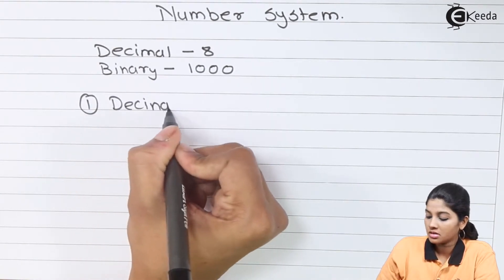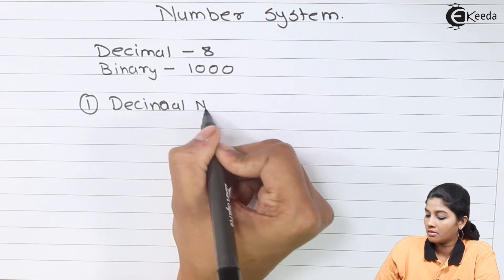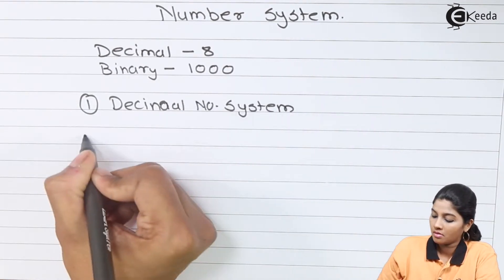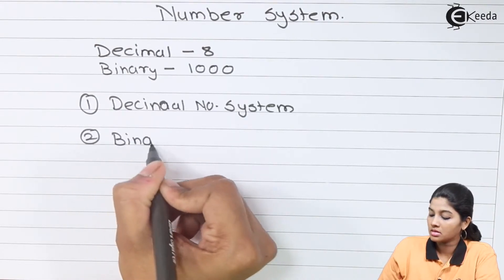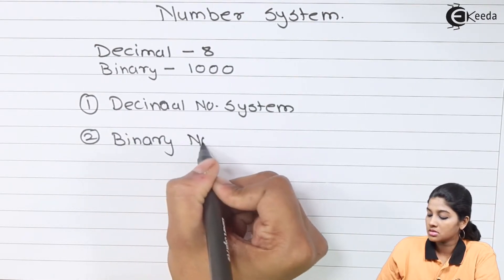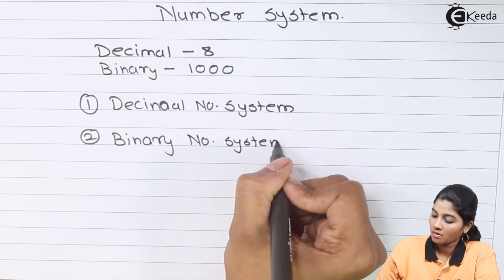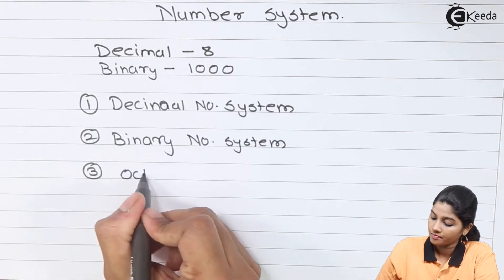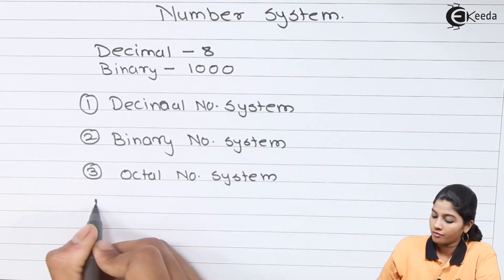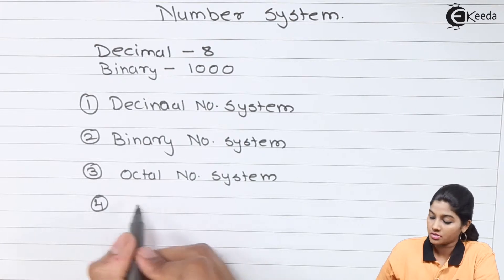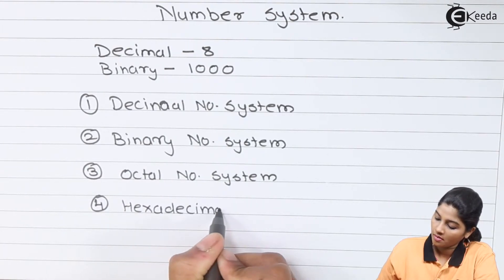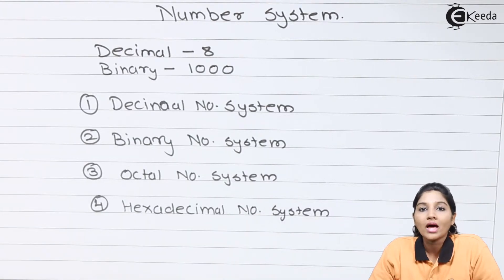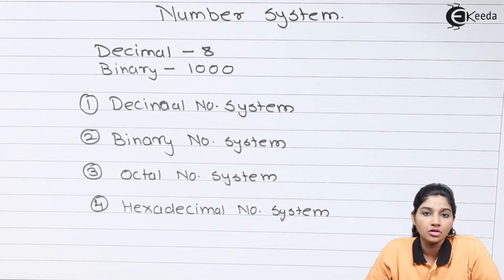There are certain number systems which are very popular in digital communication, and they are: first, the decimal number system; second, the most popular binary number system; third, the octal number system; and fourth, the hexadecimal number system. These systems vary on the basis of the base or radix of the number.